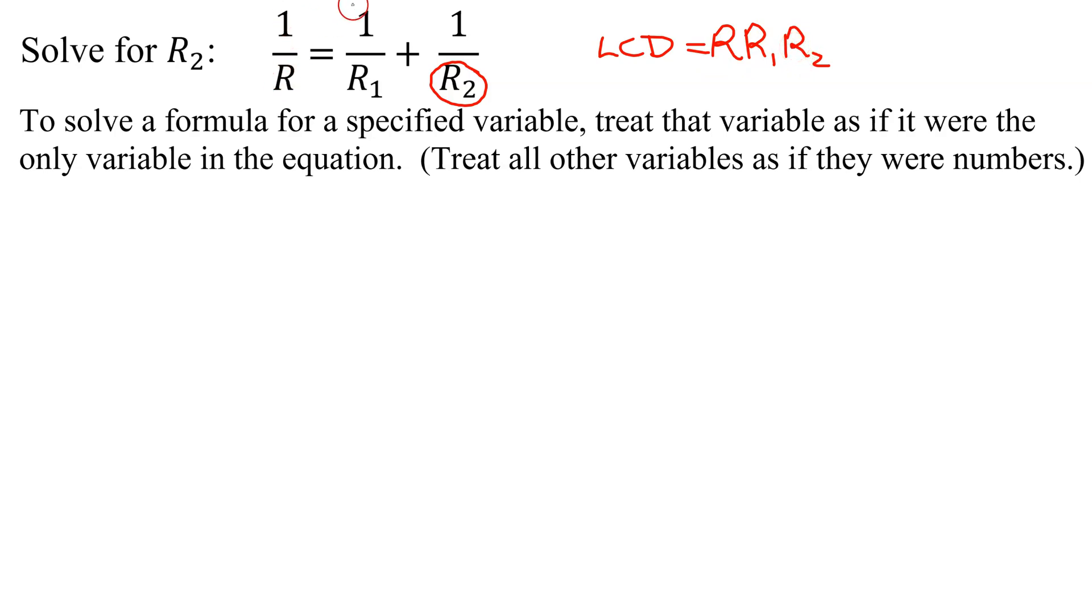So now I have one, two, three terms in my expression. So I'm going to have to multiply each of them by my LCD. So I'm going to take my LCD of R, R1, R2, turn it into a fraction by dividing it by 1. And then I'm going to multiply it by the term on the left-hand side, which is 1 over R.